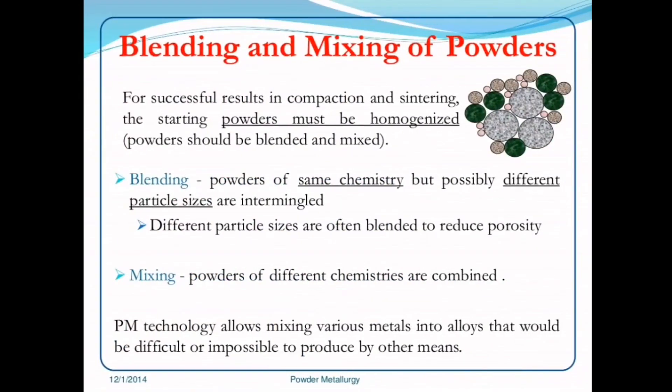The conventional powder metallurgy production sequence is blending, compacting, then sintering. For successful results in compaction and sintering, the starting powders must be homogenized — that is, blended and mixed. Blending refers to powders of the same chemistry but possibly different particle sizes being intermingled; different particle sizes are often blended to reduce porosity. Mixing refers to powders of different chemistries being combined. Powder metallurgy technique allows mixing various metals into alloys that would be difficult or impossible to produce by other methods.